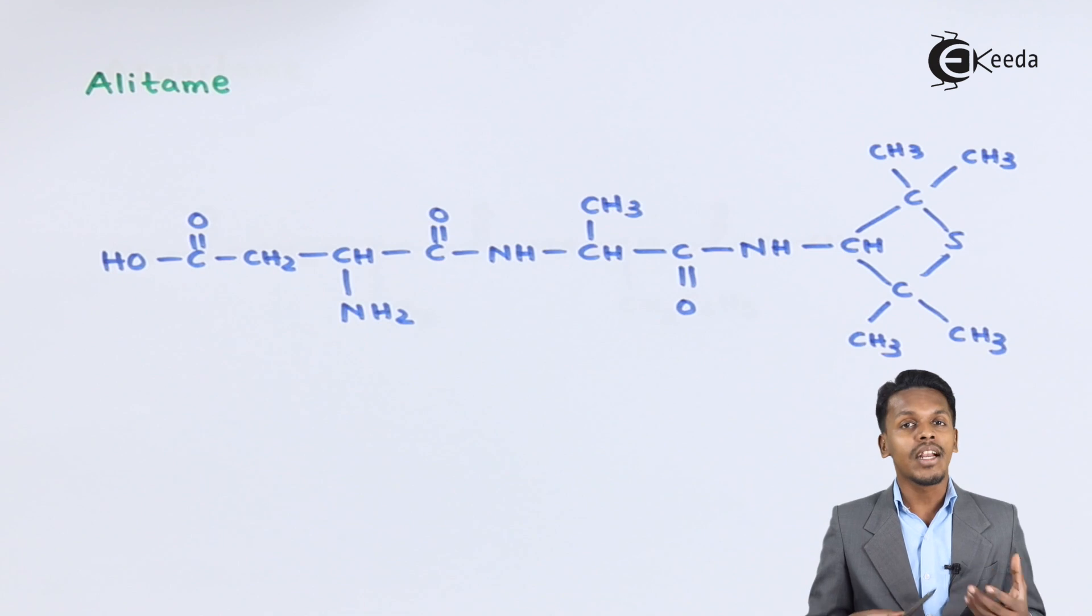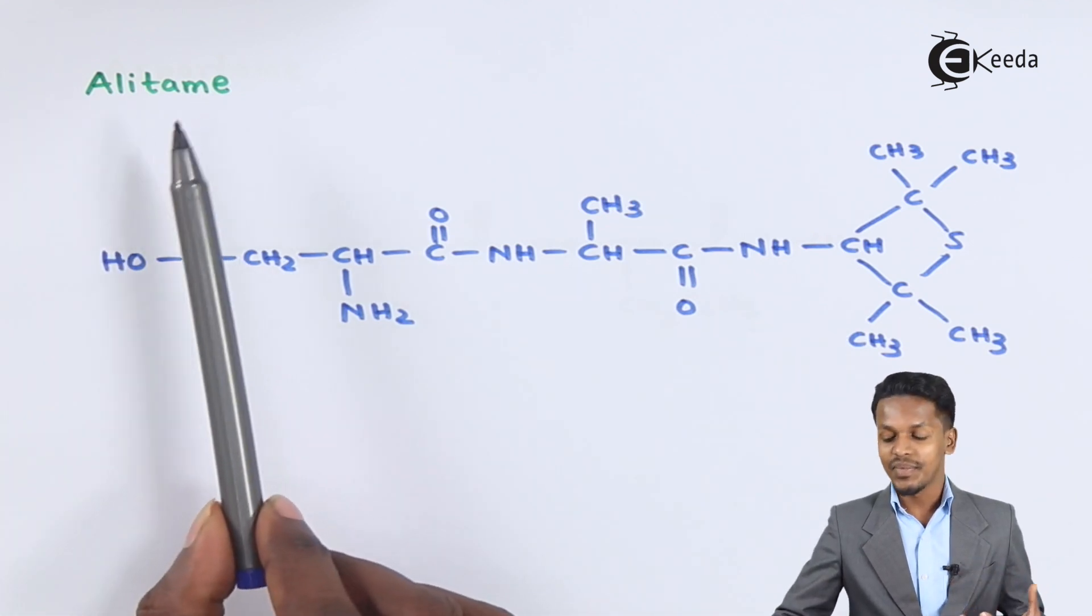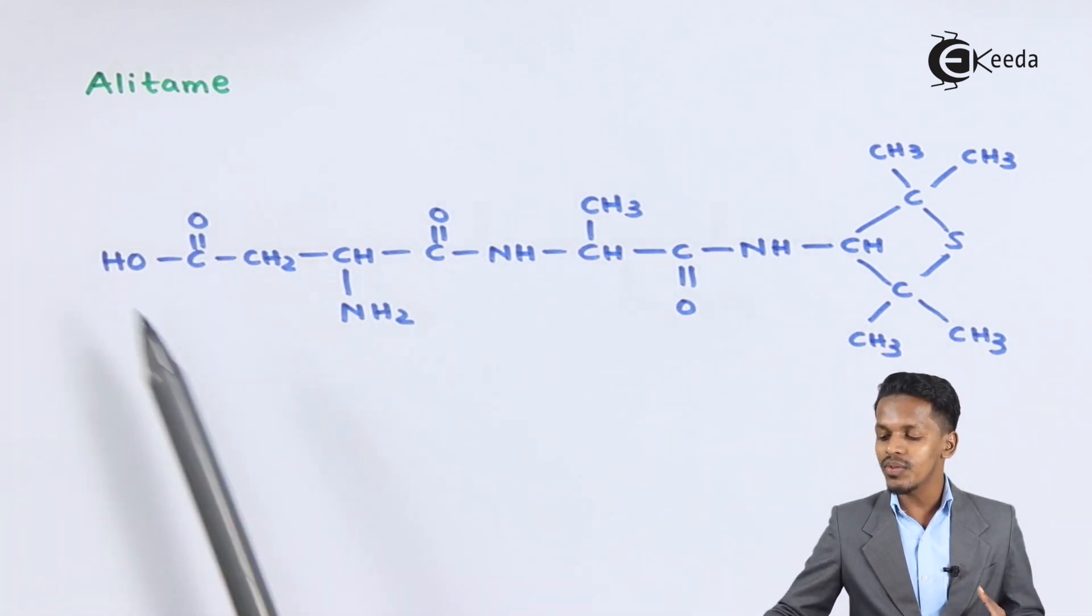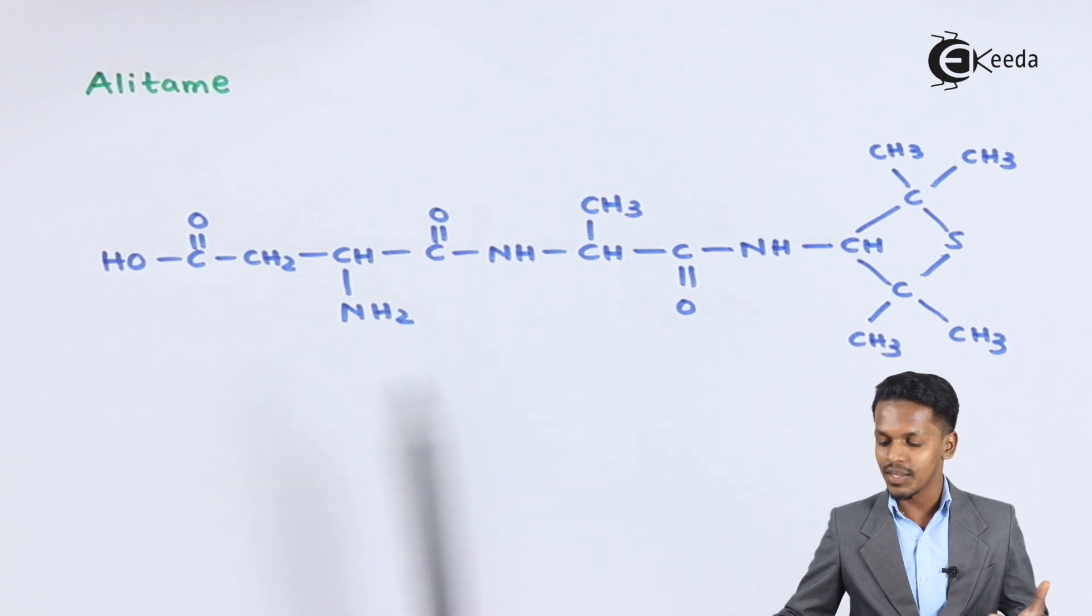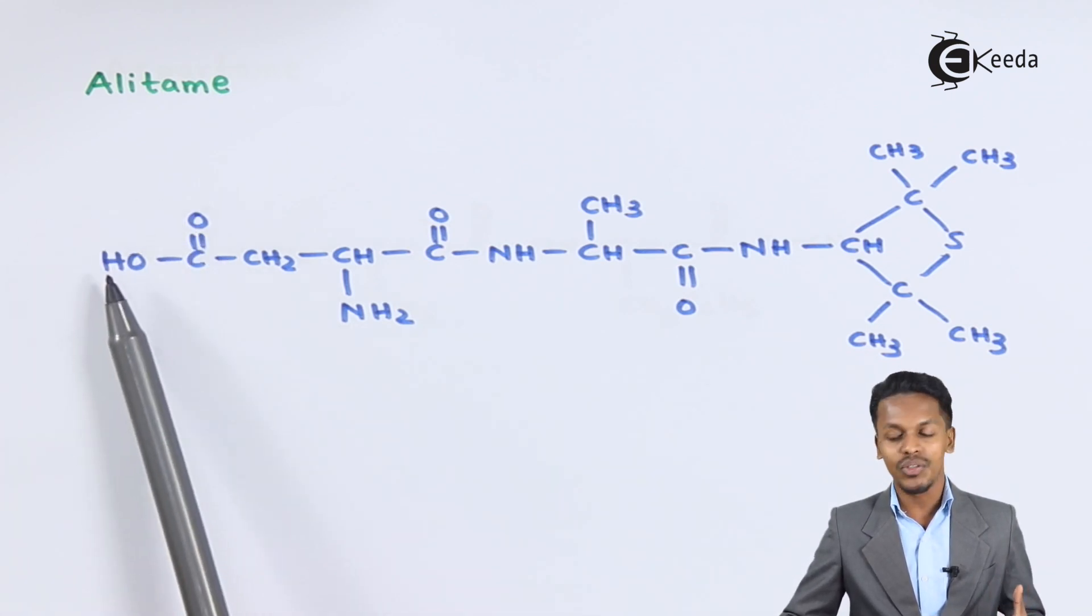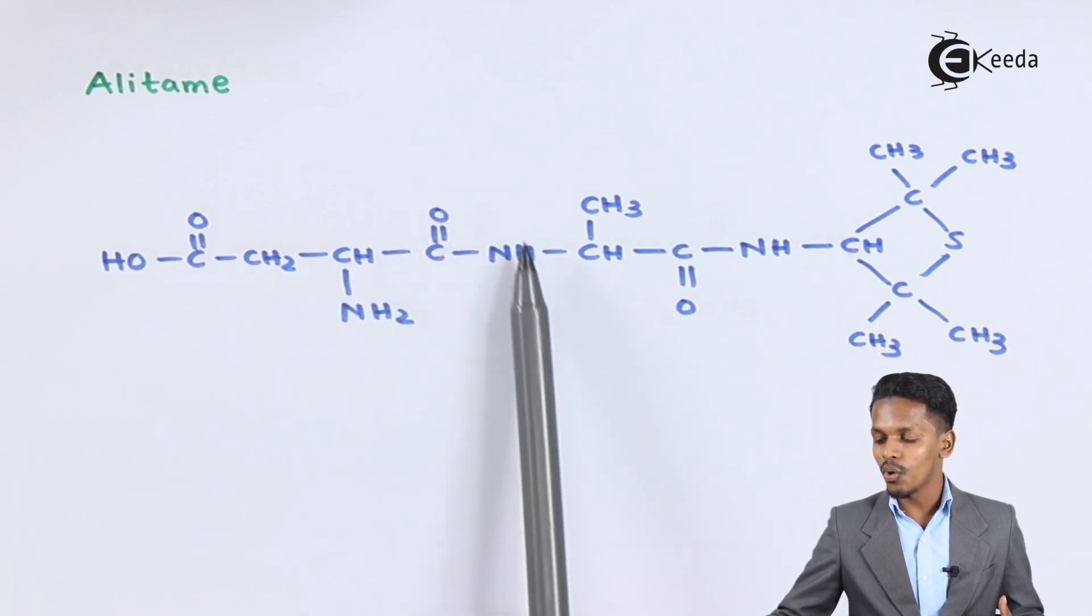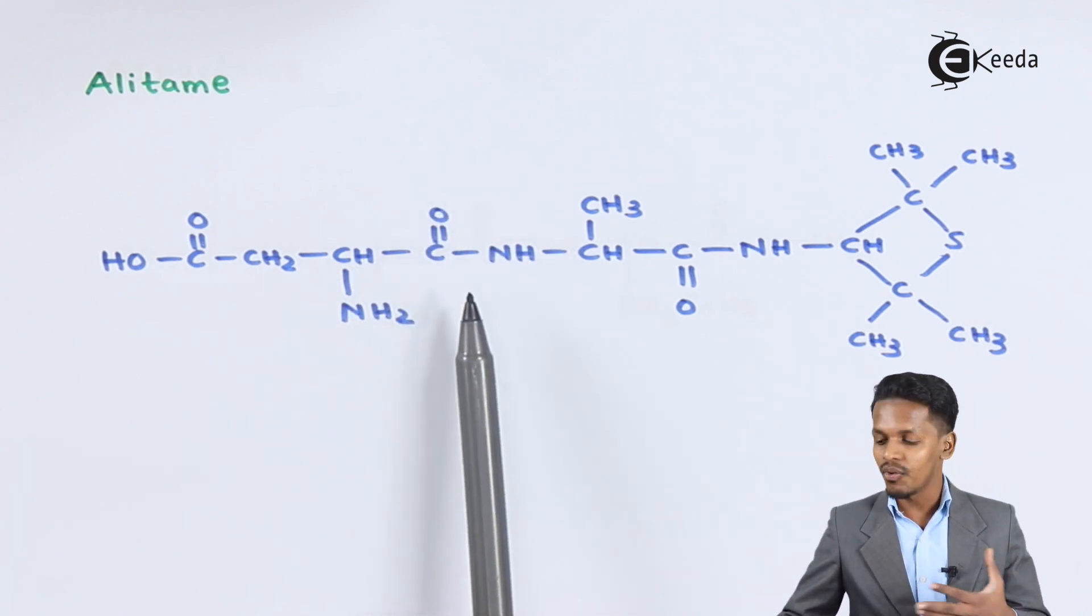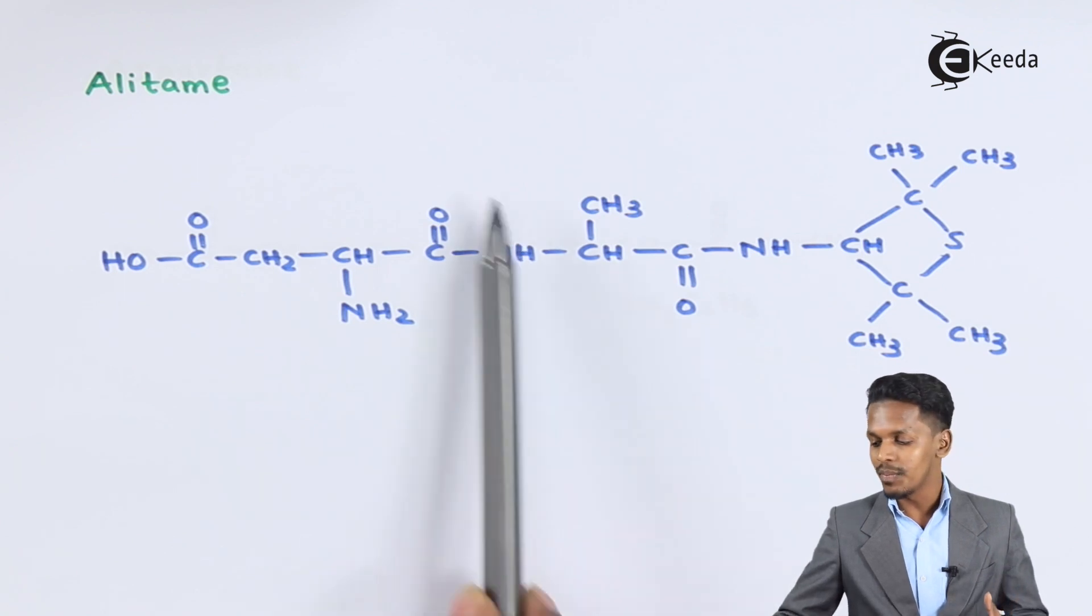The other artificial sweetener we have is alitame. This is the structure, which is very much similar to the previous one. It consists of a carboxyl group, C double bond O OH group, CH2CHNH2, C double bond O NH—that is the same peptide or we could also call it an amide group.